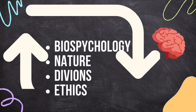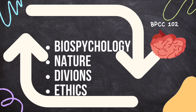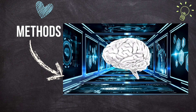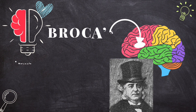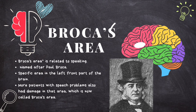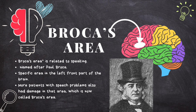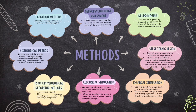The previous video on Biopsychology gave you an idea about what biopsychology is and its divisions. If you haven't watched it yet, go check it out — the link is in the description below. Now, scientists have found that different parts of the brain have different jobs. For example, Broca's area is related to speaking. In the 1800s, neurologist Paul Broca noticed that patients who couldn't speak had damage in the front left part of the brain. More patients with speech problems also had damage in that same area, now known as Broca's area. This research showed that brain damage can affect things like hunger and emotions.